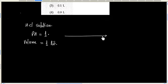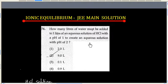This solution is diluted by adding water. Let us say V liters of water is added. The final pH becomes 2.